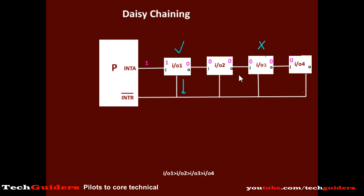Hence in the daisy chain approach, a low priority device can be interrupted by a high priority device, but a low priority device cannot interrupt a high priority device. It is also ensured that for simultaneous requests, the higher priority device will always be serviced first.